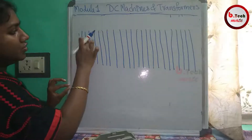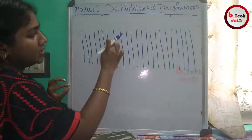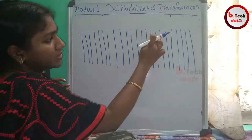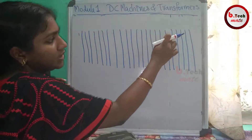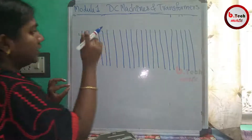Continuing the conductor numbering: 1 through 23, placing all conductors in their respective slot positions for the double layer winding. Each slot has two conductors — one in the top layer and one in the bottom layer.